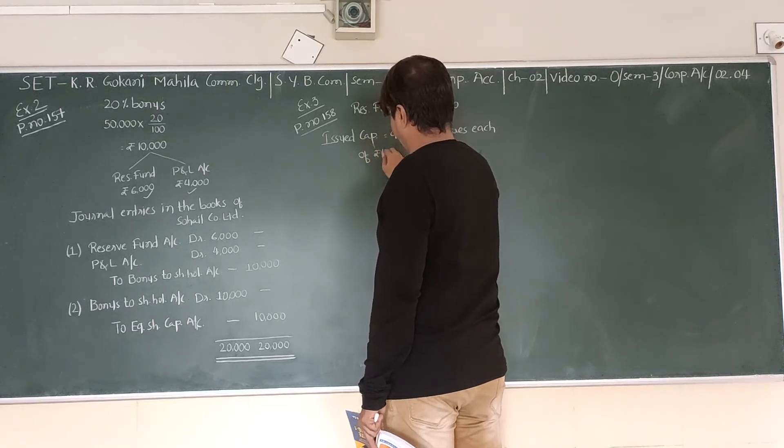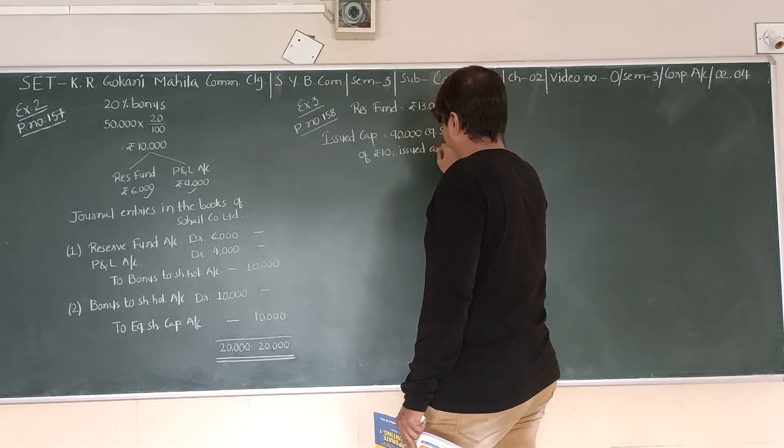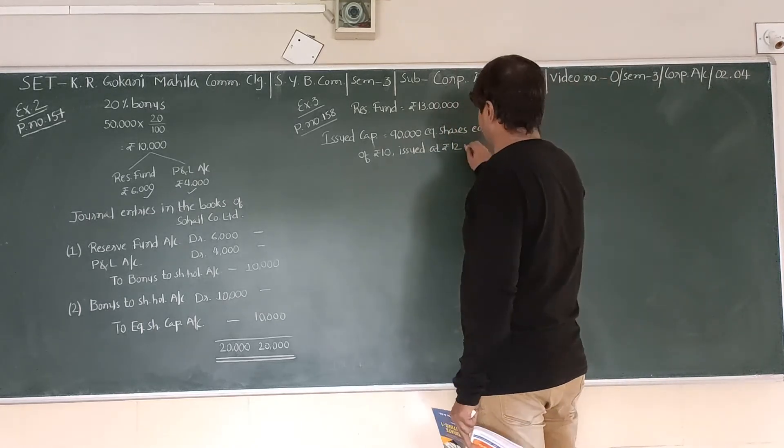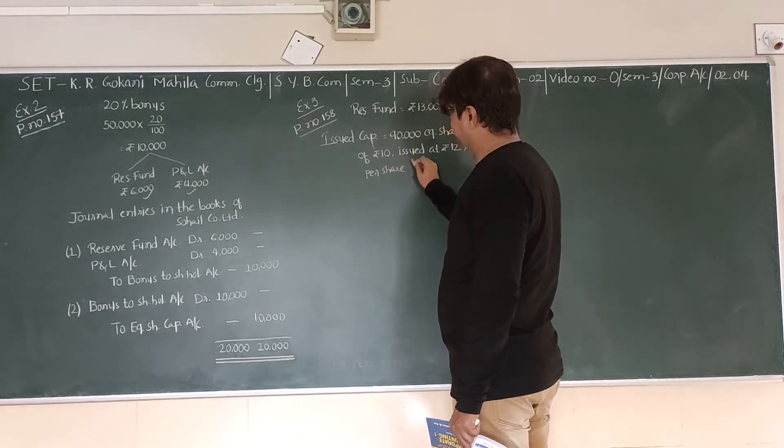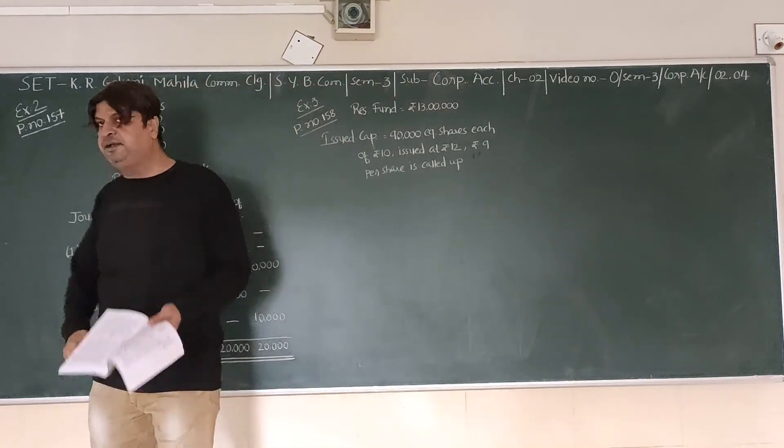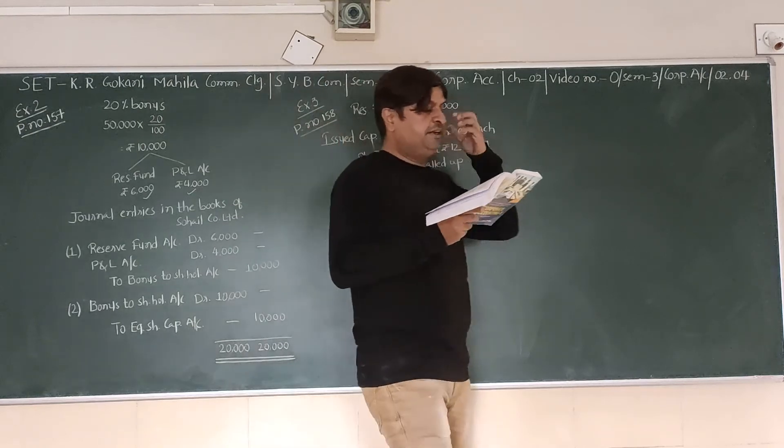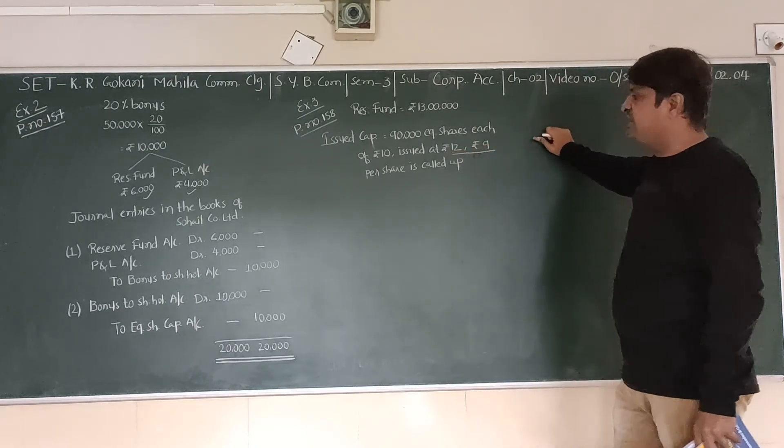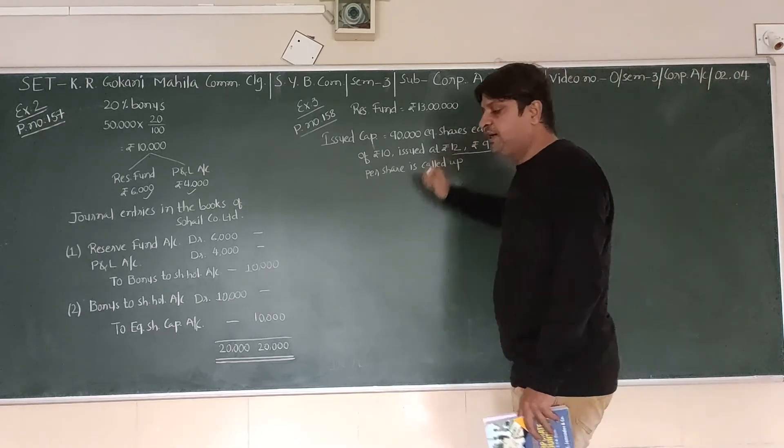Issued capital is 90,000 equity shares of rupees 10 each. These shares are issued at a premium of rupees 2, so issued at 12. Out of this, rupees 9 per share is called up. Final call of rupees 3 per share is outstanding.